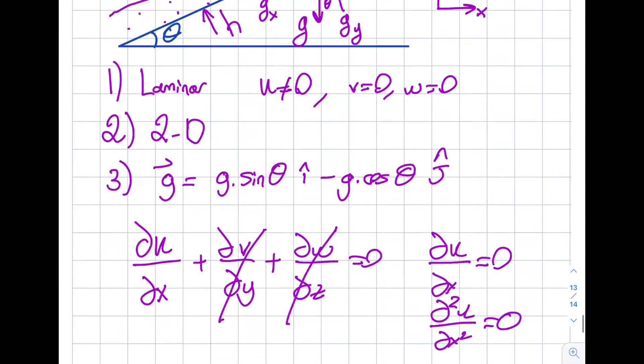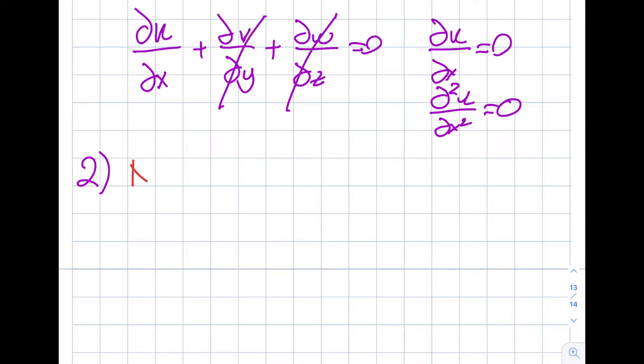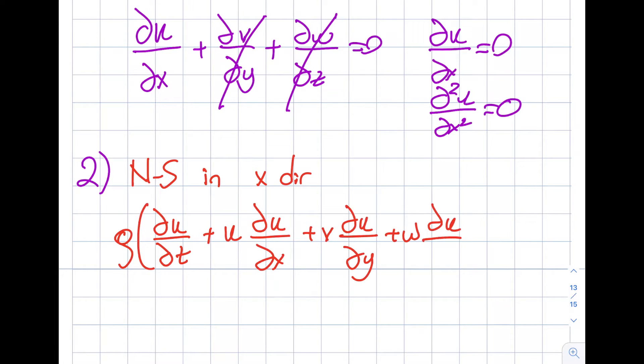The second equation is going to be the Navier-Stokes equation in the direction of the flow, and the direction of the flow is here, so that will be the x direction. So I'm going to write my NS, Navier-Stokes, in x direction: rho del u del t plus u del u del x plus v del u del y plus w del u del z